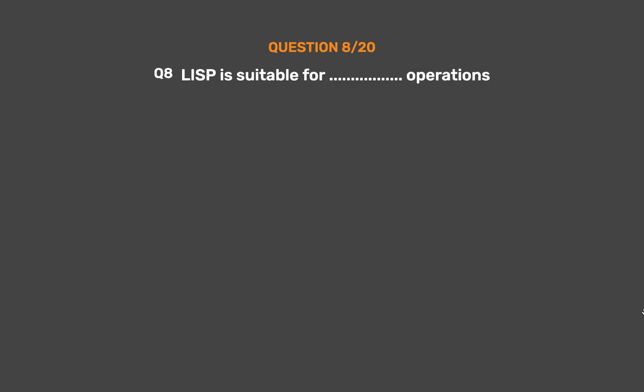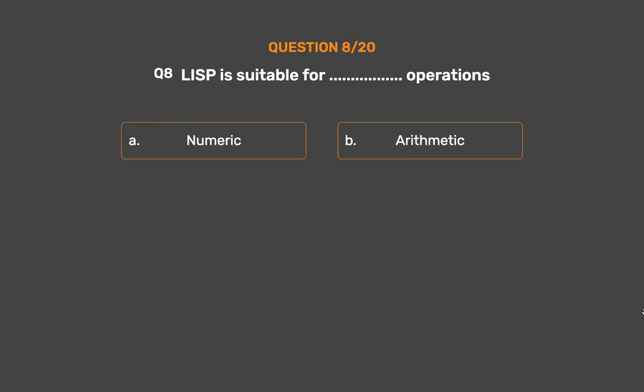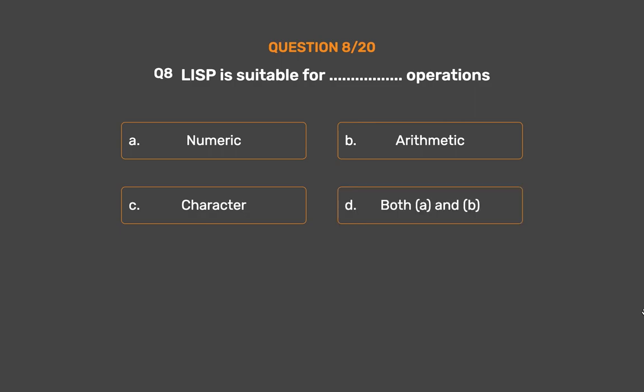Question number 8. Lisp is suitable for which operations? Option A: Numeric. Option B: Arithmetic. Option C: Character. Option D: Both A and B.